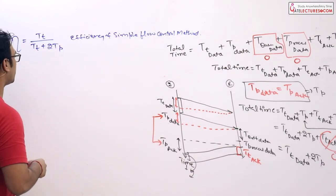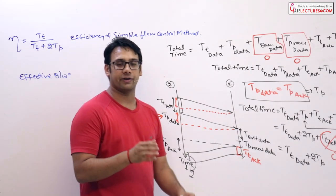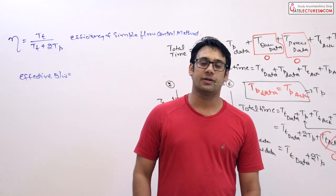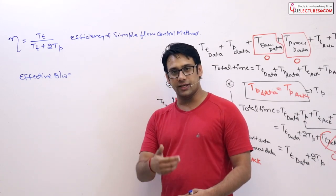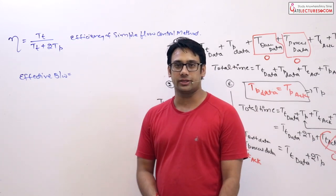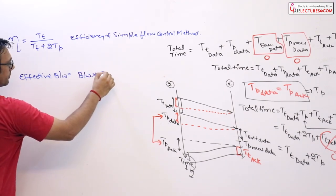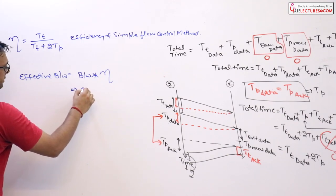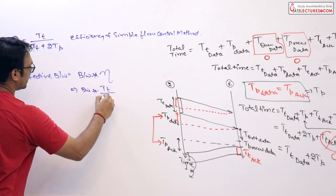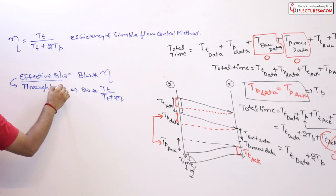If you find out what is the efficiency, then you can find out what is the effective bandwidth. Effective bandwidth means: let's say you have a 100 Mbps connection at home and you are using simple flow control methods — what is the effective speed you are actually getting? Effective bandwidth equals bandwidth multiplied by efficiency, which equals bandwidth multiplied by tt divided by (tt + 2·tp). This effective bandwidth is also called throughput.